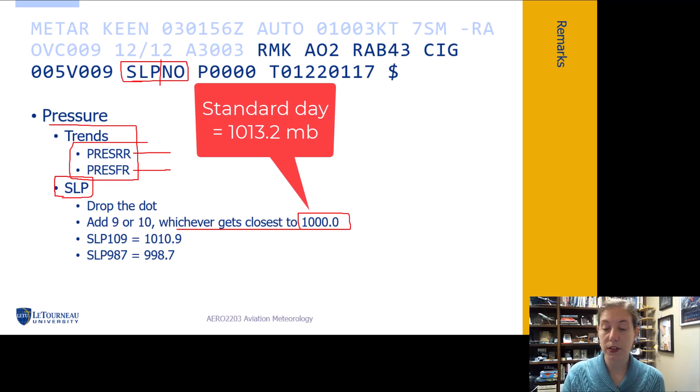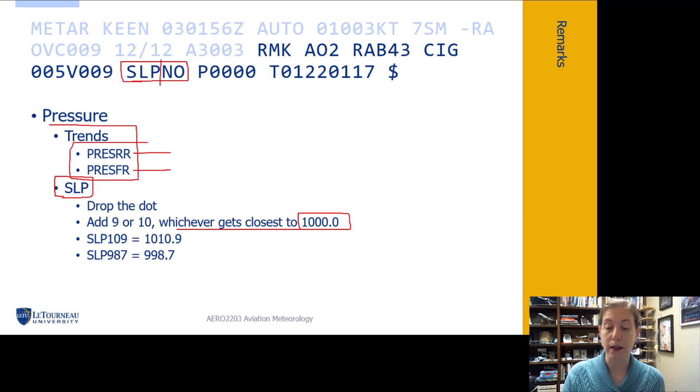So what they will do is they just drop the dot out and then basically add nine or 10. So the system is going to drop out the dot. We have to put it back in. If we see something like this, SLP 109, whatever gets me closest to a thousand.